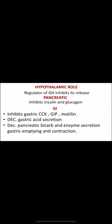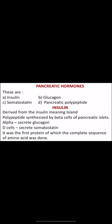In the GI tract, somatostatin inhibits hormones such as gastrin, CCK, GIP, and motilin. It decreases gastric acid secretion, pancreatic bicarbonate and enzyme secretion, and gastric emptying and contraction. Overall, it inhibits enzymes and hormones involved in digestion.